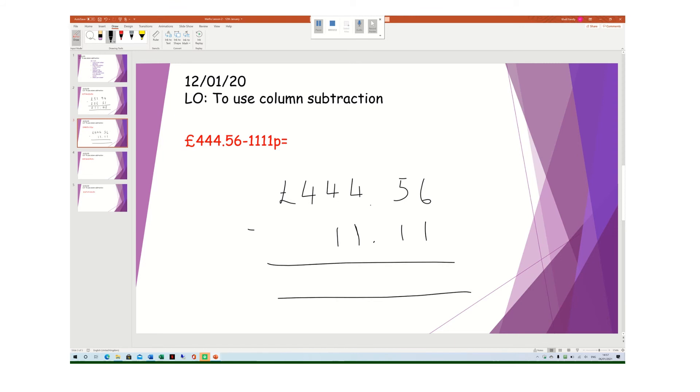So 6 take away 1 is 5, 5 take away 1 is 4. Decimal place always stays in the same place. 4 take away 1 is 3, 4 take away 1 is 3, and 4 take away nothing is 4. And there's my pound sign as well. I forgot to add my pound sign earlier as well, sorry. So I know £444.56 take away £11.11p is £433.45p.